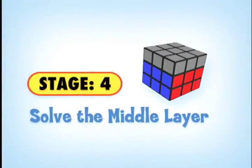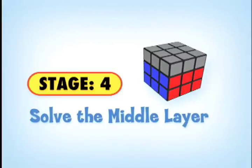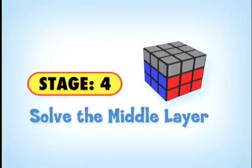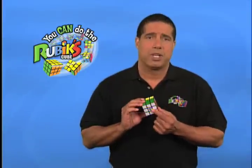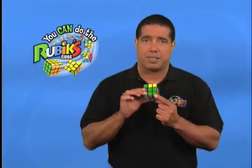Now that you've solved the white layer, our goal is to solve the middle layer. Here we focus on the edge pieces. Remember, those are the pieces located in the middle, and they have two colors. So that we don't mess up our completed white layer, we need to hold our cube with the completed white layer on the bottom.